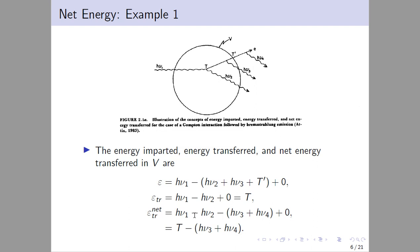The net energy transfer equals H_ν1 minus H_ν2 minus H_ν3 plus H_ν4, which simplifies to T minus H_ν3 plus H_ν4. This represents the net energy transferred within the volume — how much energy from the photon is transferred in this volume and how much exits.